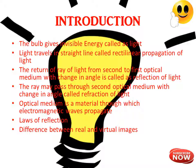The return of a ray of light from the second to the first optical medium with a change in angle is called reflection of light. The ray may also pass through the second optical medium with a change in angle, and this is called refraction of light. An optical medium is a material through which electromagnetic waves propagate. We have already learned the laws of reflection, the difference between real and virtual images, and rectilinear propagation examples in Part 1 — please go back and check that video.